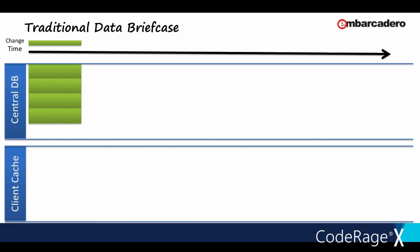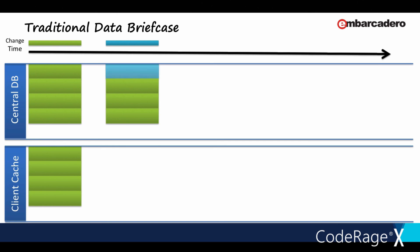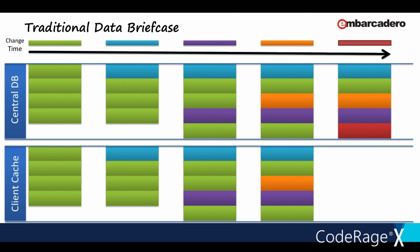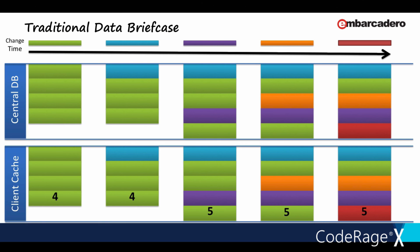Let's look at the traditional way data is moved around — this is the problem Change Views addresses. Typically, briefcasing data is important for offline work, something often overlooked due to challenges in mobilisation projects. In a simple example: a change is made on the server, then we have to fetch the entire dataset again because we don't know what's changed. As multiple changes happen centrally, we have to do multiple fetches. In this simple example alone we end up with 23 data packets.